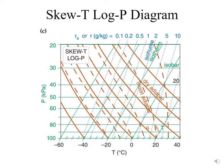These diagrams are widely used by the National Weather Service and are also used by glider pilots to forecast the strength of thermals and the height of the base of the associated cumulus clouds.